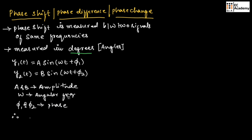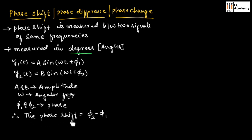Therefore, we can say the phase shift can be given as φ2 minus φ1. If we take the difference between the phase of the second signal and the phase of the first signal, we will get the phase shift. Therefore, phase shift is equal to φ2 minus φ1.